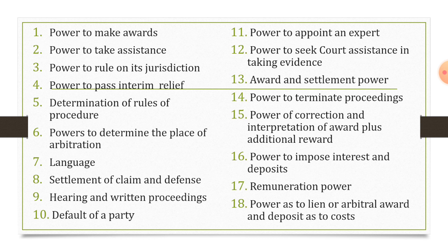Next is award and settlement power — the arbitrator has all the powers and rights to award or give judgment to either party. Then power to terminate proceedings, to stop the proceedings and stop the hearing. Power of correction and interpretation of award plus additional rewards — after giving the judgment, if required, the arbitrator can correct that judgment, interpret it, and may award an additional reward. Next is power to impose interest and deposits, remuneration powers, and lastly, power as to lien on the arbitral award and deposit as to cost.